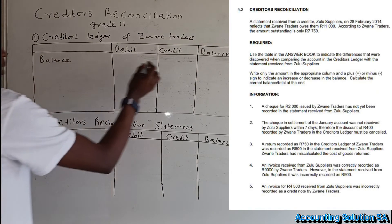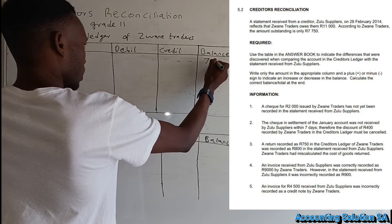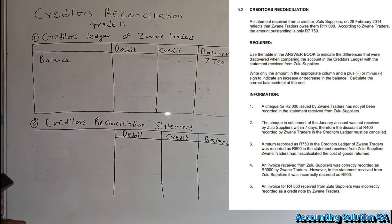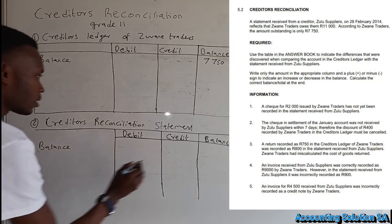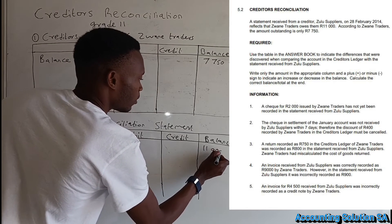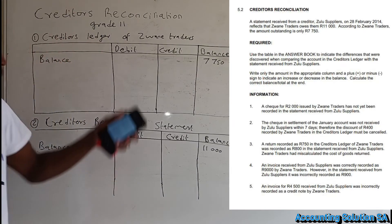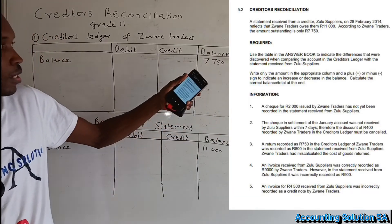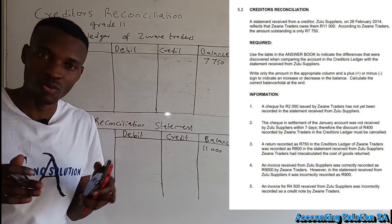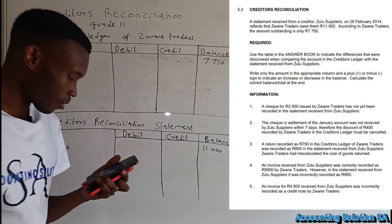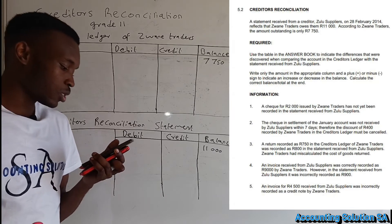The balance in our books indicates an amount of 7,750. The statement from Zulu Supplier reflects 11,000. The main purpose of a reconciliation is to make sure that these balances are the same. As you can see, they are not the same, which means something happened or went wrong. Now let's proceed to item number one.